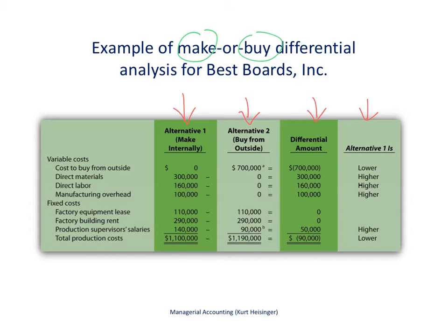If we make the wakeboards internally, the variable costs we'll incur are direct materials, direct labor, and manufacturing overhead. The fixed costs include the lease on factory equipment, the lease for the building, and production supervisor salaries. Our total costs, if we make our wakeboards internally, will be $1.1 million dollars.